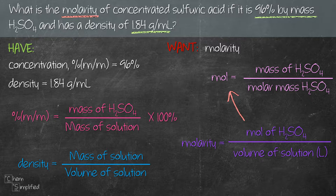Which formula should we start with first? For percent by mass, we have the percent but not the mass of solute or solution. For density, we have the density but not the mass or volume. For molarity, we don't have either the moles or the volume. For the mole formula, we can find the molar mass of H₂SO₄ but we don't have its mass. So we're going to have to make an assumption for the volume of the solution, which will give us the mass of the solution using the density formula.